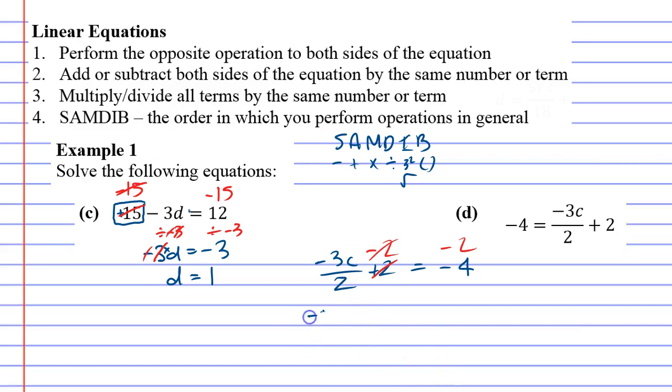All right. So we have negative 3c over 2 equals negative 6. Now, on this one, we've got negative 3 times c, and we've got divide 2. So multiplication and division are actually equal to each other, meaning you can do them in any order. The same also applies for addition and subtraction. Neither gets priority over the other.